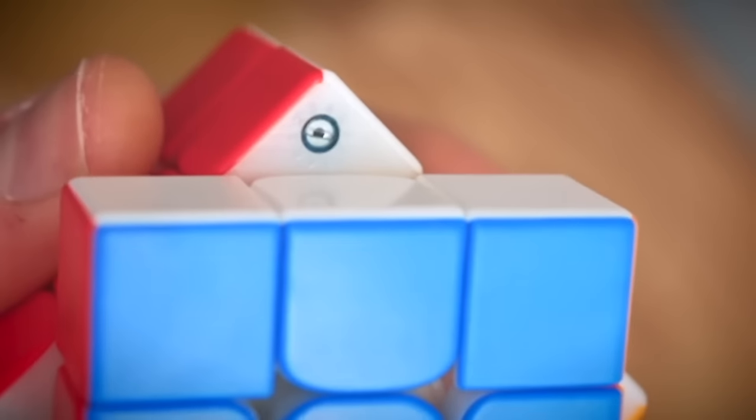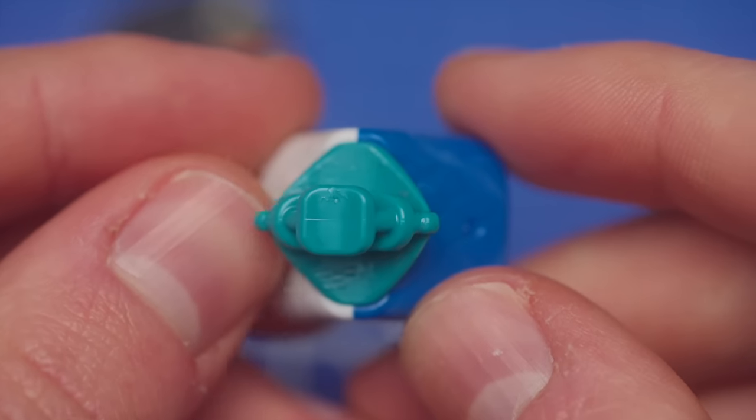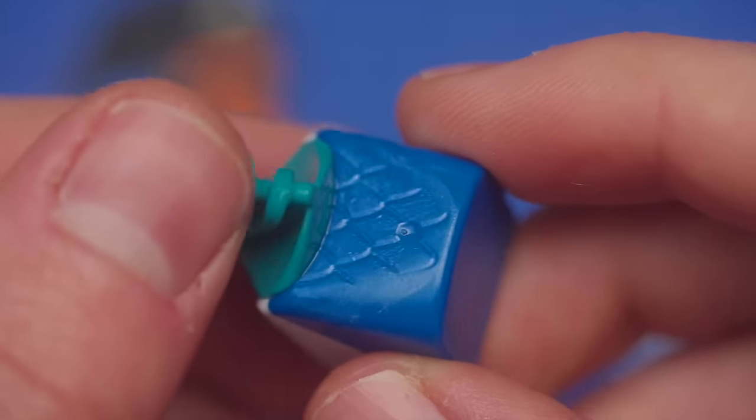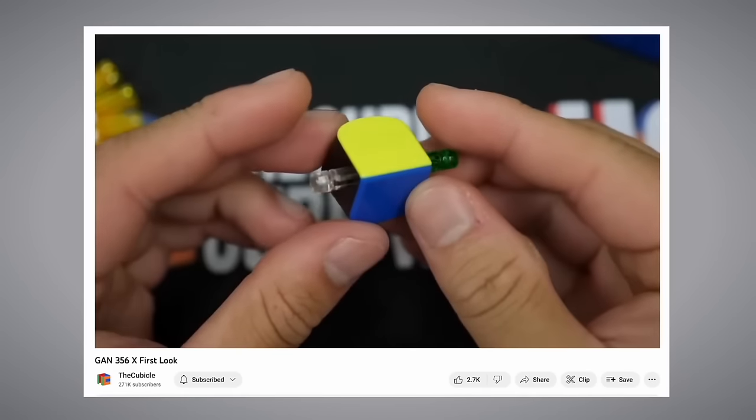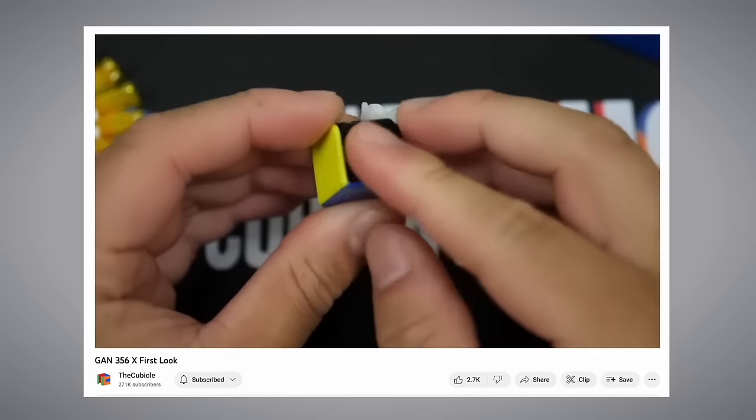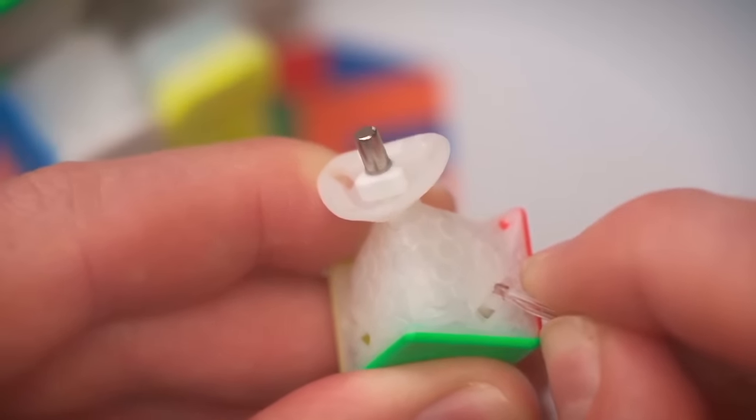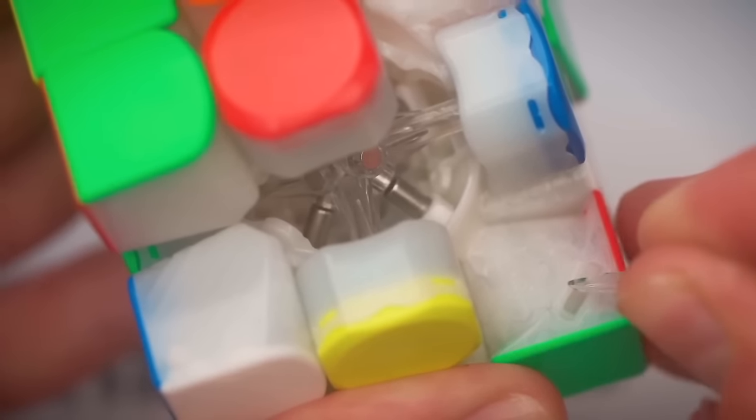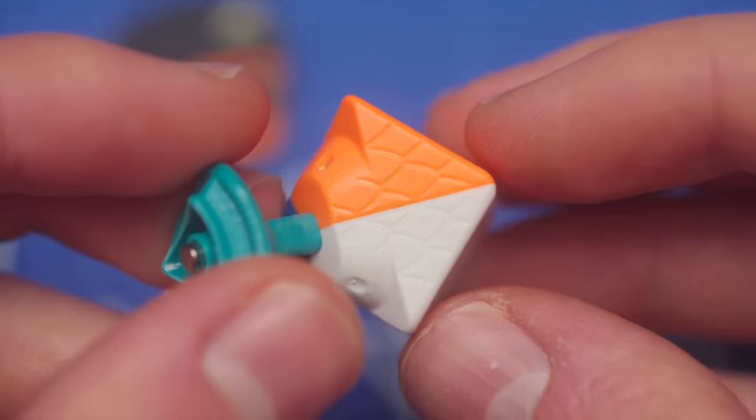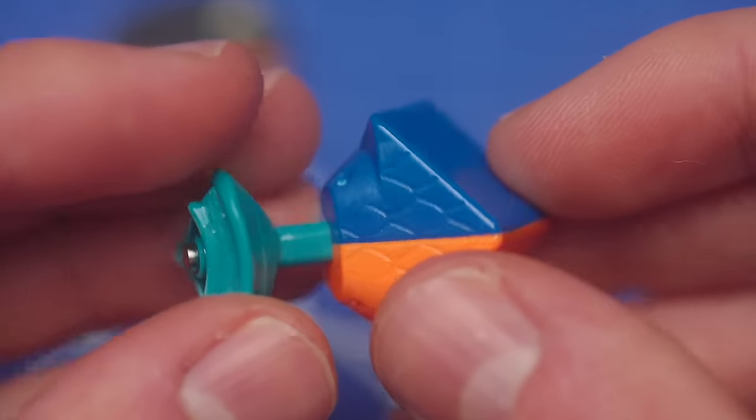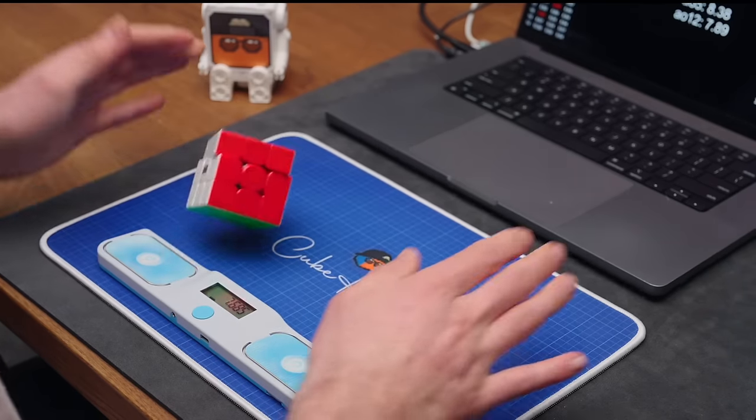One thing might be missing, which are adjustable magnets. But here's why not having adjustable magnets might actually be a benefit. To give a cube adjustable magnets, you have to have some sort of mechanism either in the edges or in the corners, which one, make the cube more heavy. And two, makes the surface of the pieces less smooth. So although the RS3V5 doesn't have adjustable magnets, the cube is super light and super smooth.